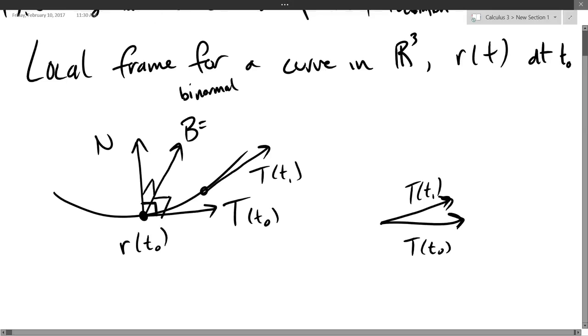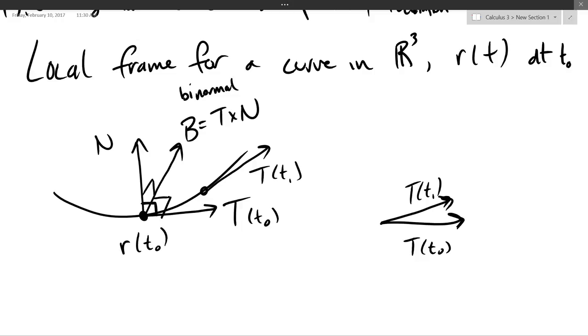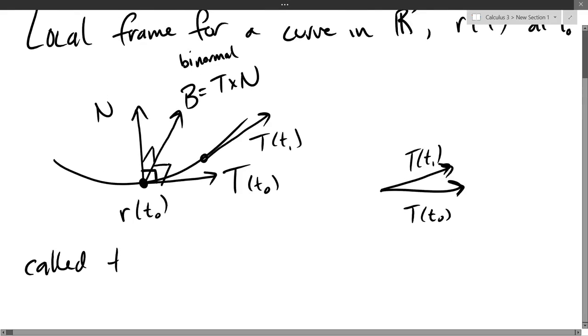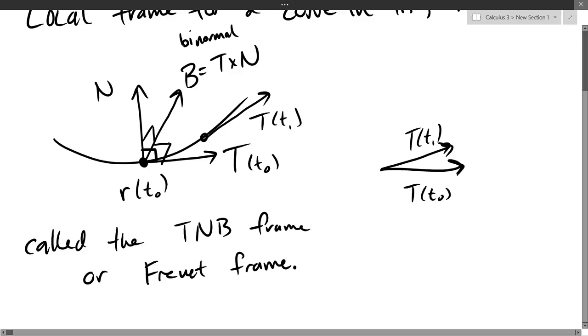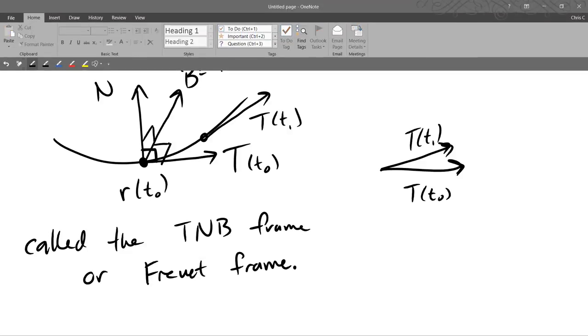And B is T cross N. Of course, if you change the order around and cross T, you'll get it going the opposite direction. And this is called the TNB frame or the Frenet frame. I'm not good at French at all, but I know most T's at the end of words in French are silent. So it's basically pronounced like that. You don't say Frenet unless you're drinking champagne.